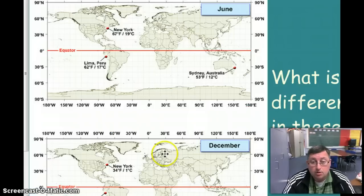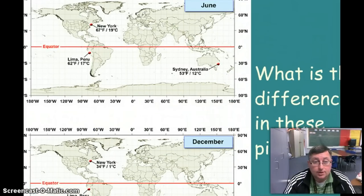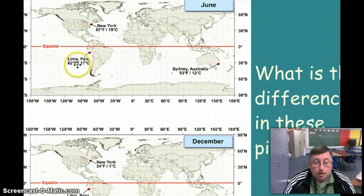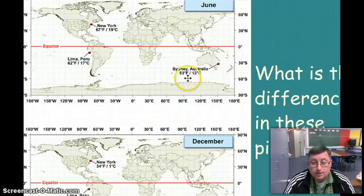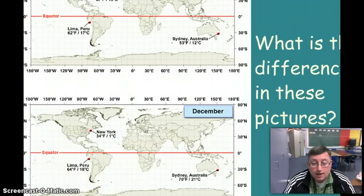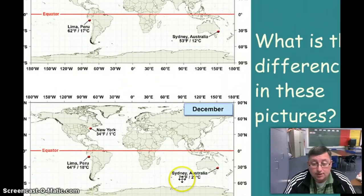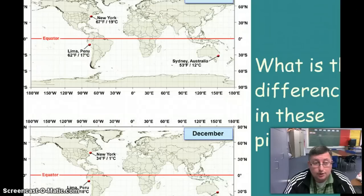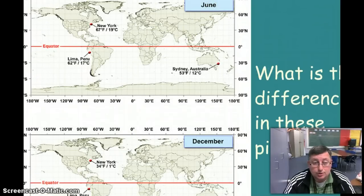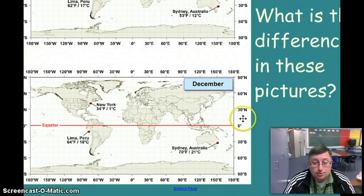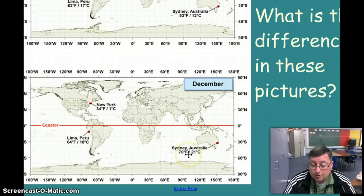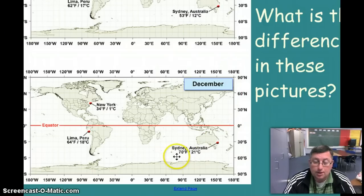Well, if you look at these two pictures here, try to figure out what the difference is. You've got New York at 67 degrees and New York at 64 degrees. Sydney, Australia is at 55 degrees or 53 degrees, and Sydney, Australia is at 70 degrees. If you look at the differences, this is in June and this is in December. So in December it's 70 degrees in Australia, so at Christmas time they're having sun and summer.